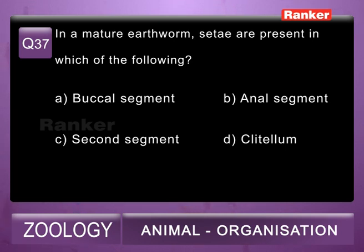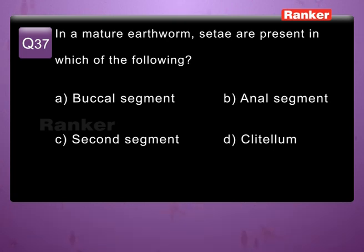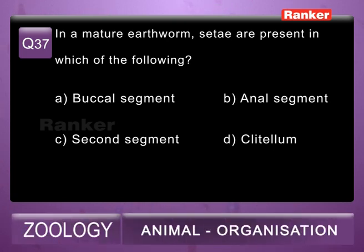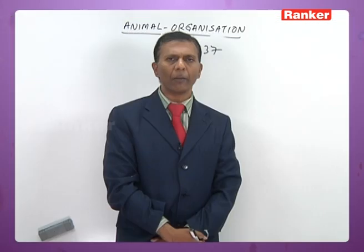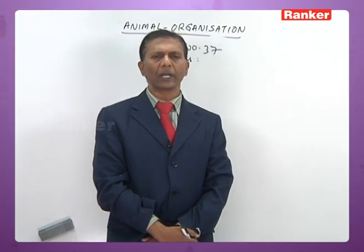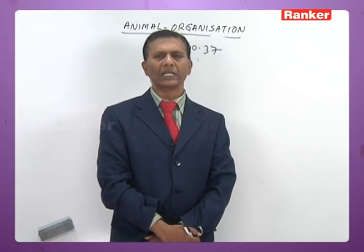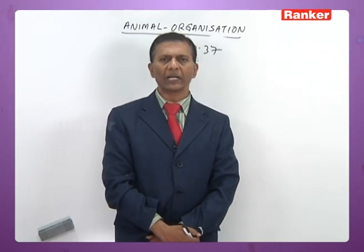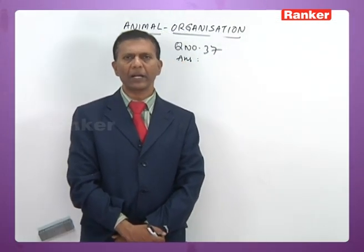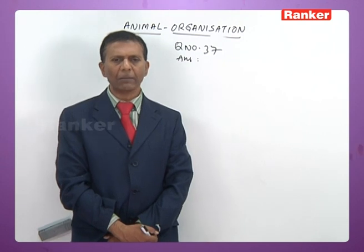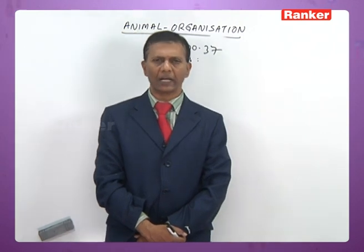Options: A) buccal segment, B) anal segment, C) second segment, D) clitellum. In the earthworm, setae are absent in the first segment, last segment, and clitellum.